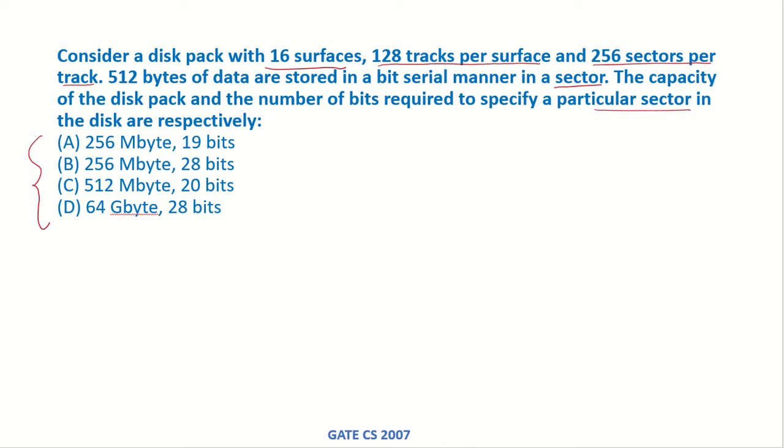So first of all we have to find the capacity of the disk pack. There are 16 surfaces, each surface is having 128 tracks and each track is having 256 sectors and 512 bytes of data which is stored in each sector.